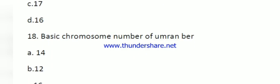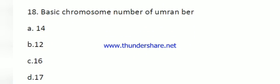Question number 18: basic chromosome number of Indian bear. Bear is a tetraploid in nature, 2n = 4x = 48. Therefore the right answer is 12.